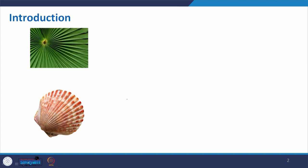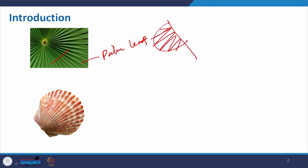Before discussing the folded plate structure and its components and technical details, let us understand some folded plate structures that exist in nature. This is basically a palm leaf, and here we can see how it is made. Even for a hand-driven fan we use the leaf when it is dried up, and it gives good stability.